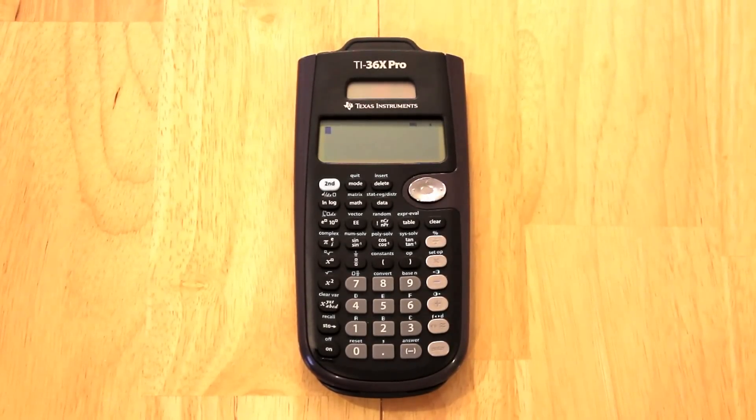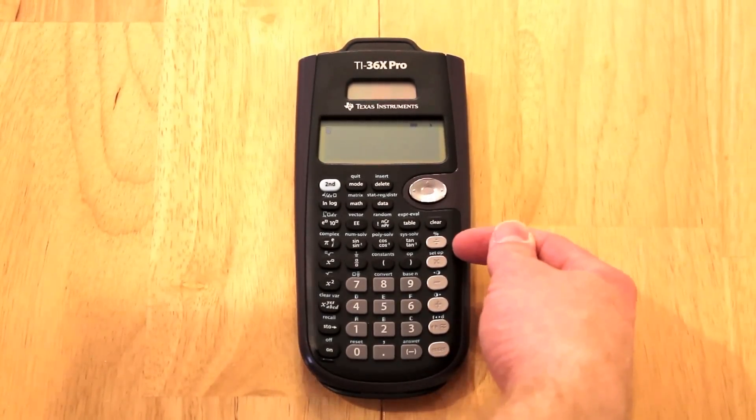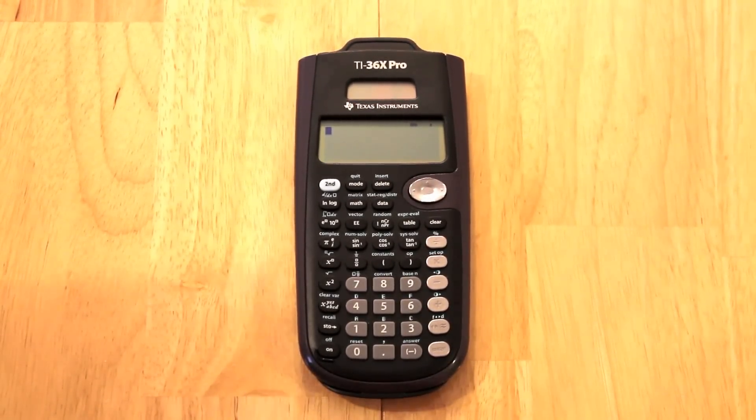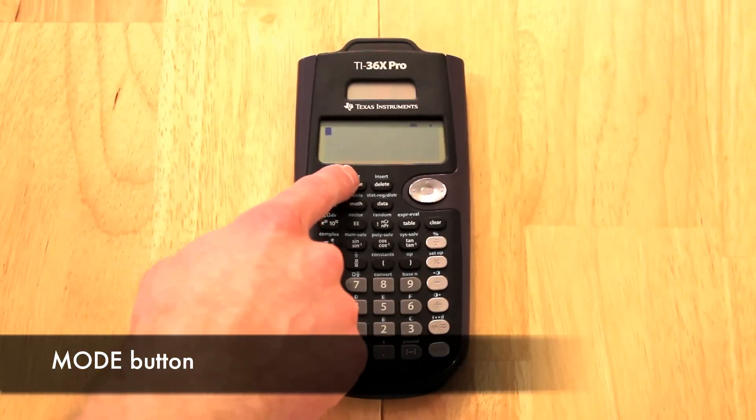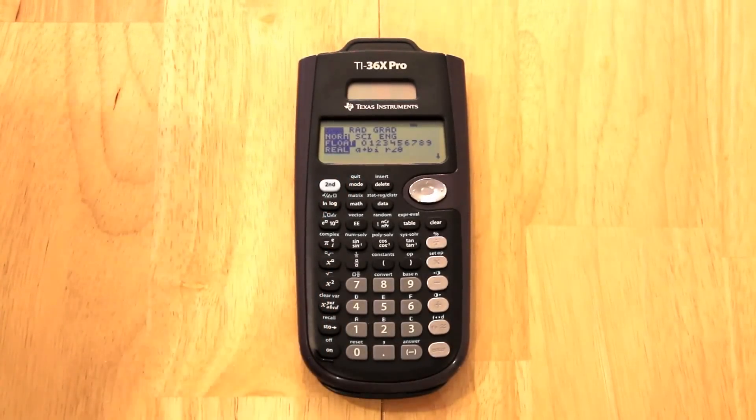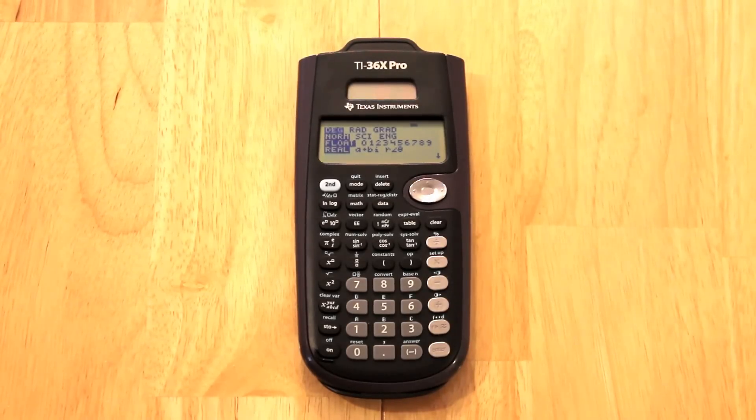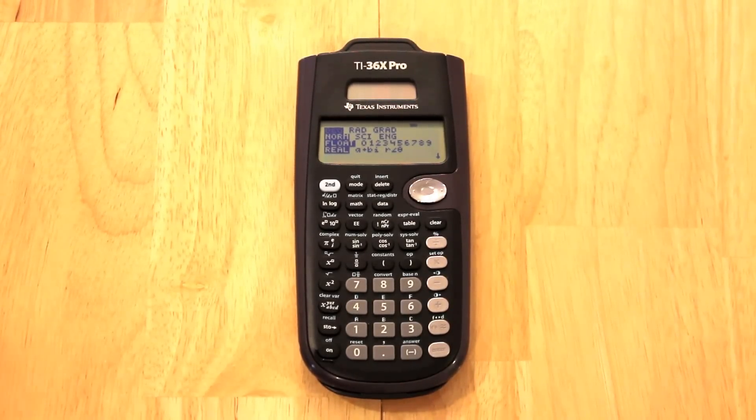So we'll start out with mode and as you can see you've got your basic calculator functions on this right side, it's very typical. And then the mode function, if you're familiar with the Texas Instruments 89 or 83, those type calculators, you can see that's where you choose between degrees, radians, if you want floating point decimals or if you want a fixed number of decimals, you can choose if you want your output in real only, if you want to have complex in rectangular format or polar format.